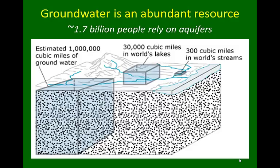Groundwater is an abundant resource. Roughly 1.7 billion people around the world rely on aquifers for municipal water use. From this graphic from the U.S. Geological Survey, there is an estimated 1 million cubic miles of groundwater in the Earth's crust, whereas there's only about 30,000 cubic miles of water stored in lakes and 300 cubic miles of water stored in the world's streams.